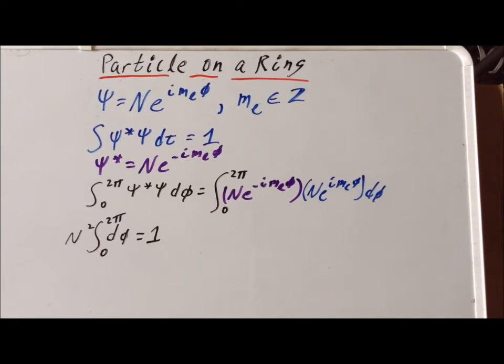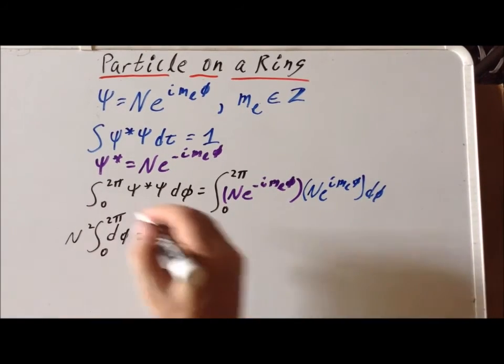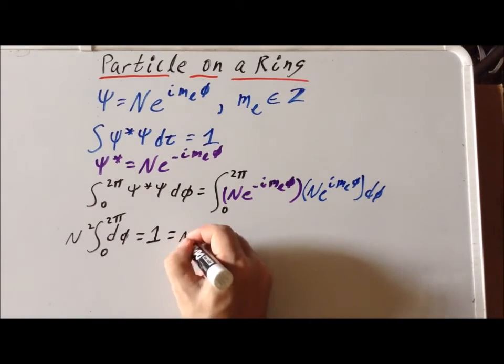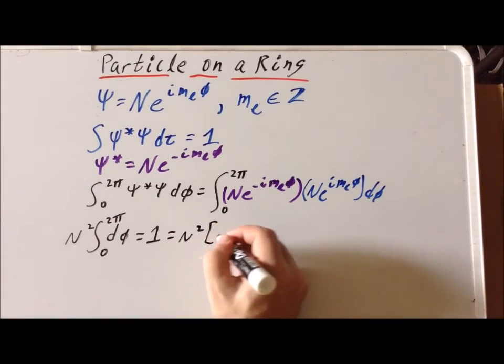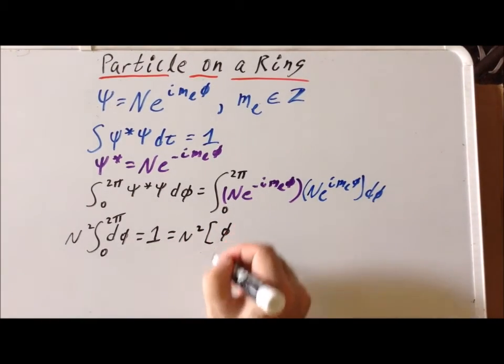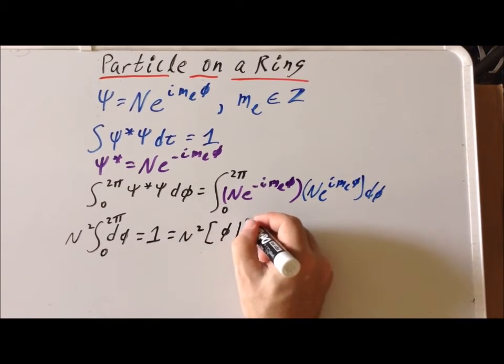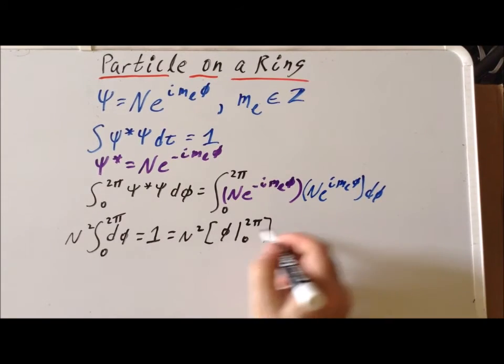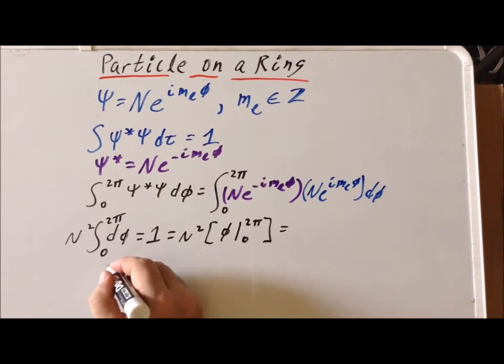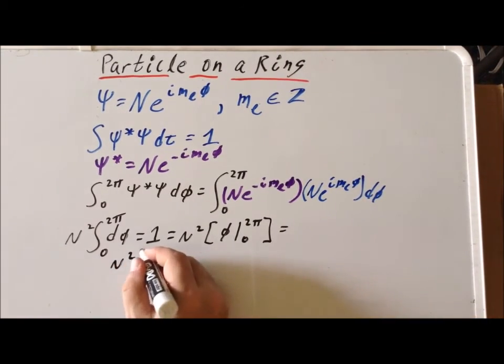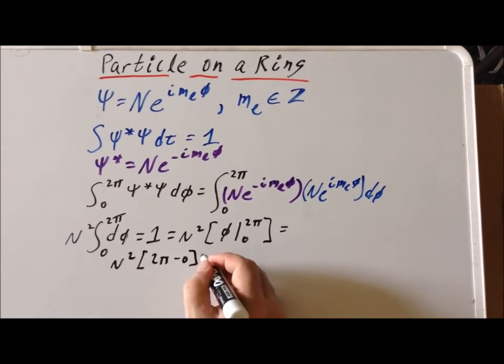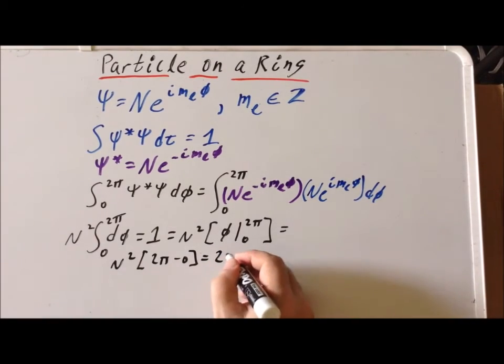So we continue, the integral of d phi is simply phi, the angle, between the limits of 0 and 2 pi. This gives us n squared times 2 pi minus 0, which is equal to 2 pi times n squared.